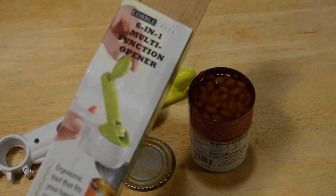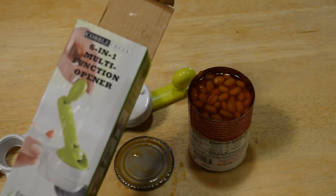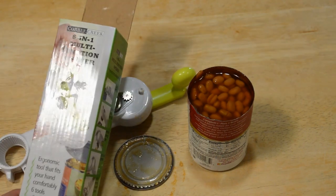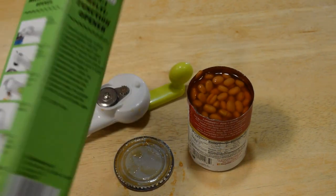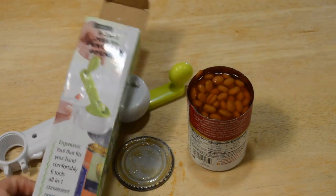So yeah, I just thought I'd try it out. It's the Cobbler Creek six-in-one multi-function opener. I think this was pretty disappointing with those serrated edges. Just build quality. You know, even packaging kind of leaves something to be desired.